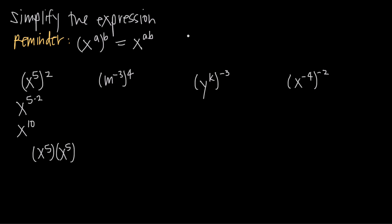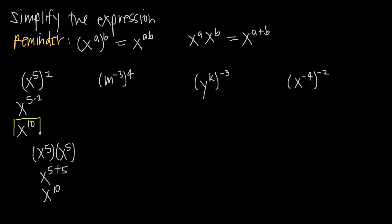We know from studying exponent rules that when we have x to the a times x to the b — in other words, the bases are the same but the exponents are different and these are multiplied together — that this is equal to x to the a plus b. So when we have our bases separated, each with its own exponent, we add the exponents together. Here we can say x to the fifth times x to the fifth equals x to the 5 plus 5, which is x to the 10. Either way, you get the same answer.